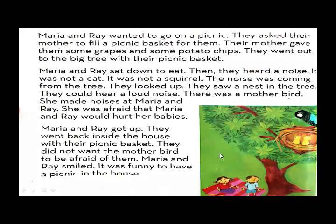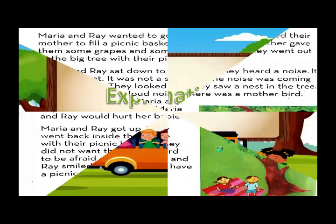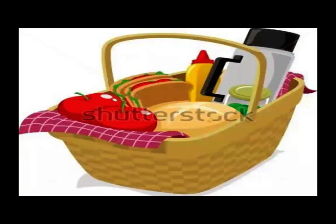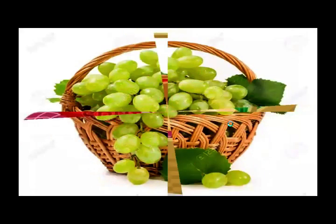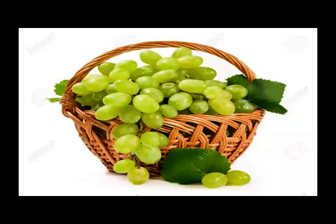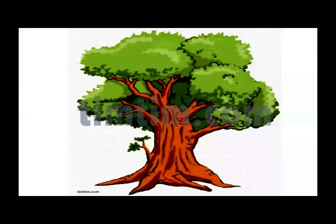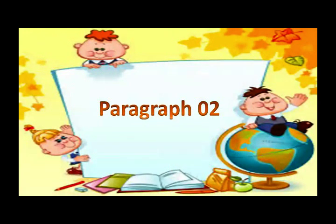Now let me explain the full story with a pictorial explanation. In this picture you can see Maria and Ray — they are very excited to go for a picnic. They asked their mother to fill a picnic basket for them. A picnic basket is a basket where you add your food and carry it to your destination. Their mother gave them some grapes and potato chips — packed chips easily available from shops. Then they went to a big tree for their picnic.